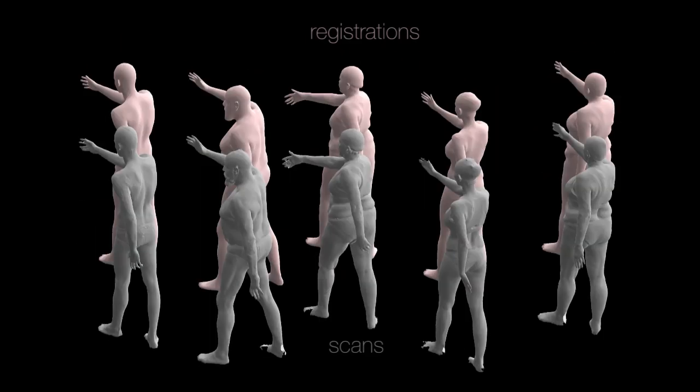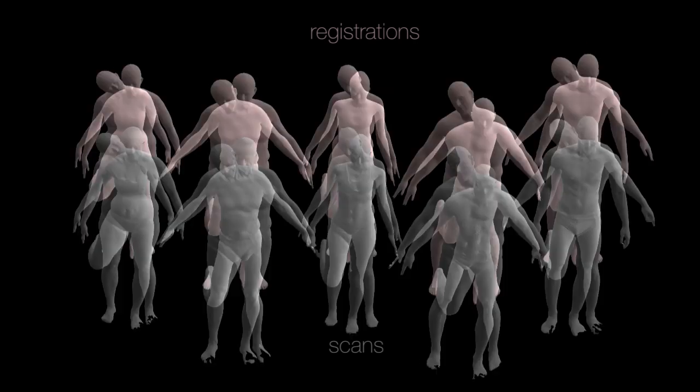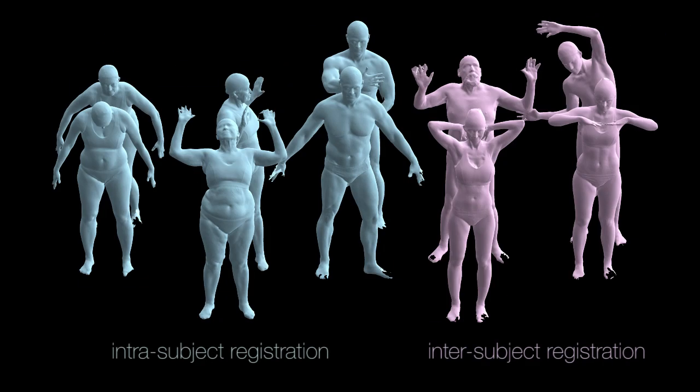FAUST is split into a training set composed of 100 scans and their corresponding registrations, and a test set with 100 scan pairs to be registered.